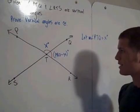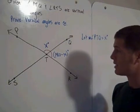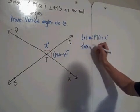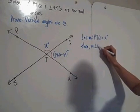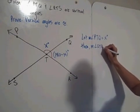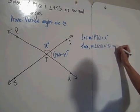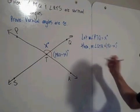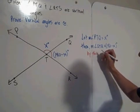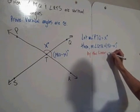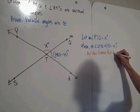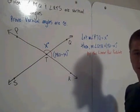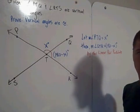Because 180 minus x degrees plus x degrees is equal to 180. Then the measure of angle QTR is equal to 180 minus x degrees. This is by the linear pair postulate, which says that the angles in a linear pair must be supplementary.